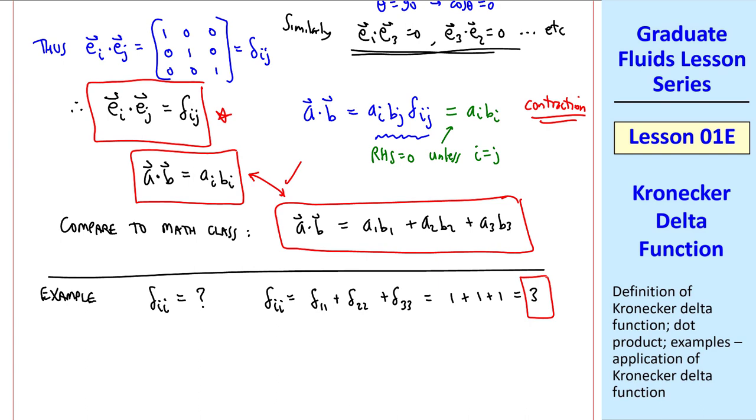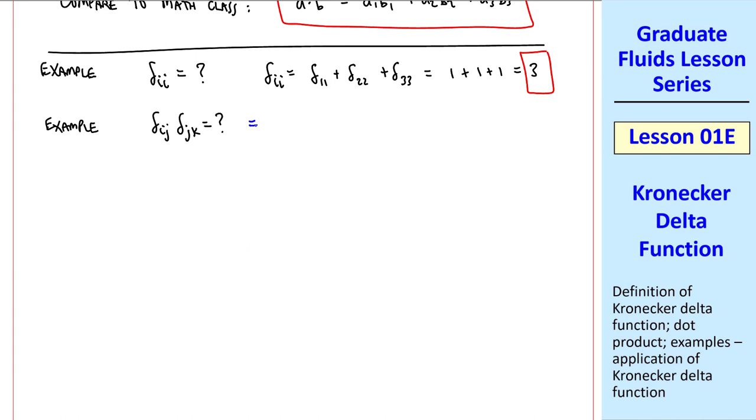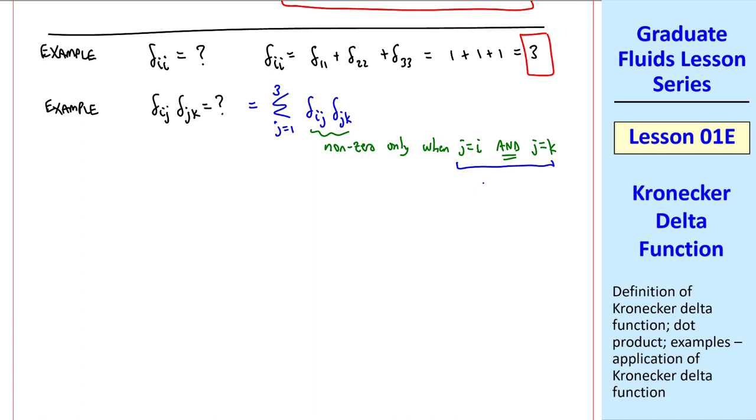Here's another example. What's delta i j delta j k? Well, we can make the same argument that we did when we contracted. Namely, this is equal to the sum over j of delta i j delta j k. And this is non-zero only when j equal i and j equal k, which can be true only if i equal k. So this reduces to a tensor that is 1 when i equal k and 0 if i does not equal k. So delta i j delta j k is simply delta i k. Again, this is a contraction.